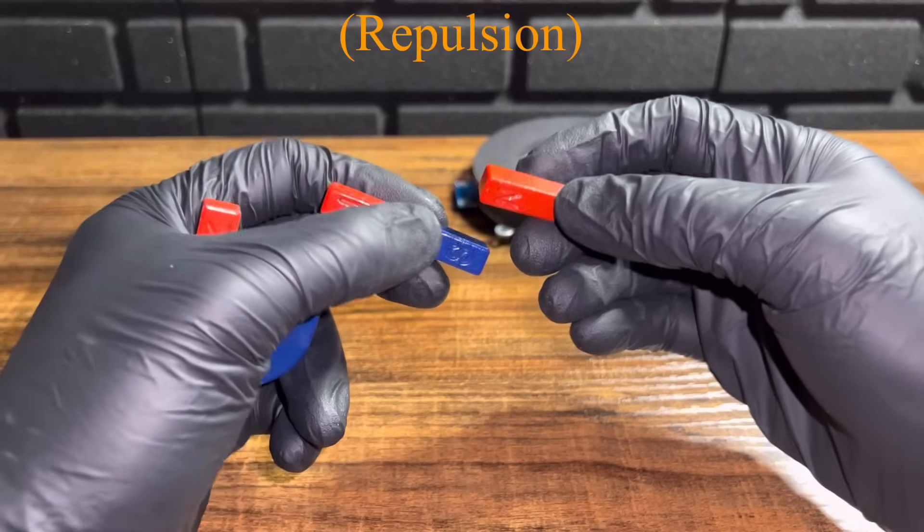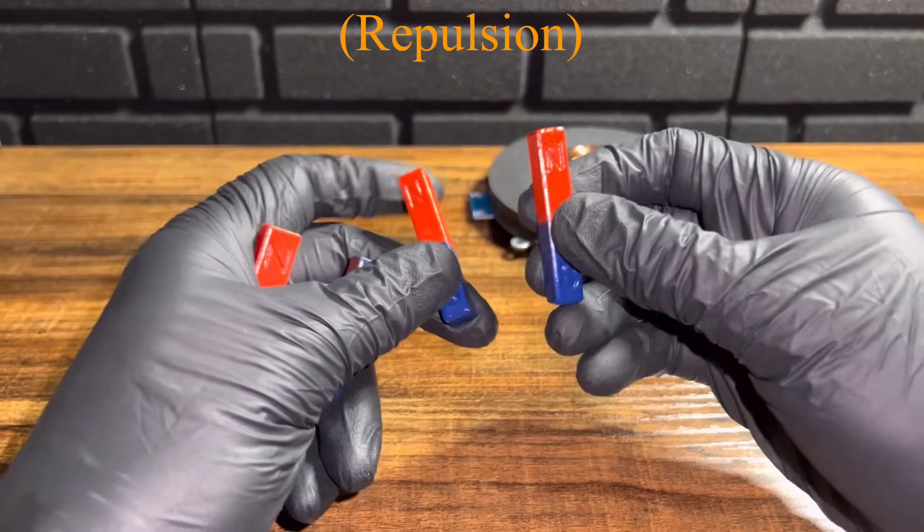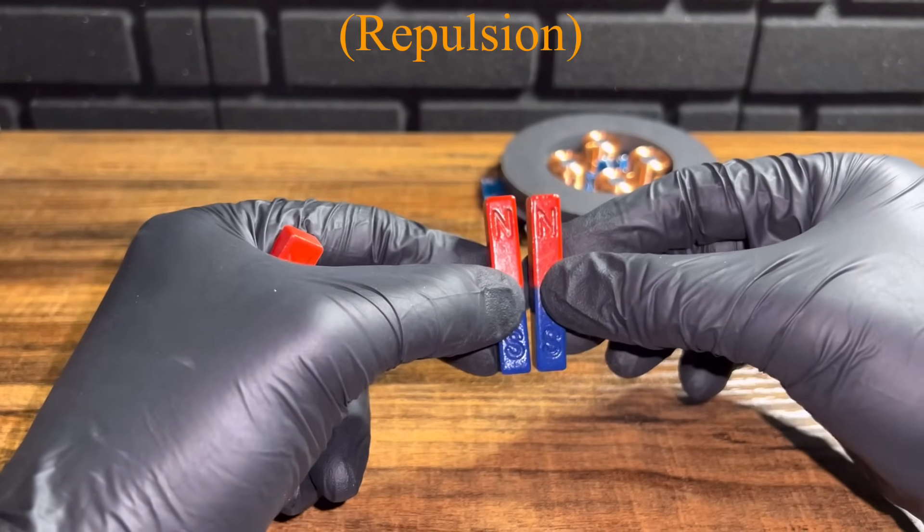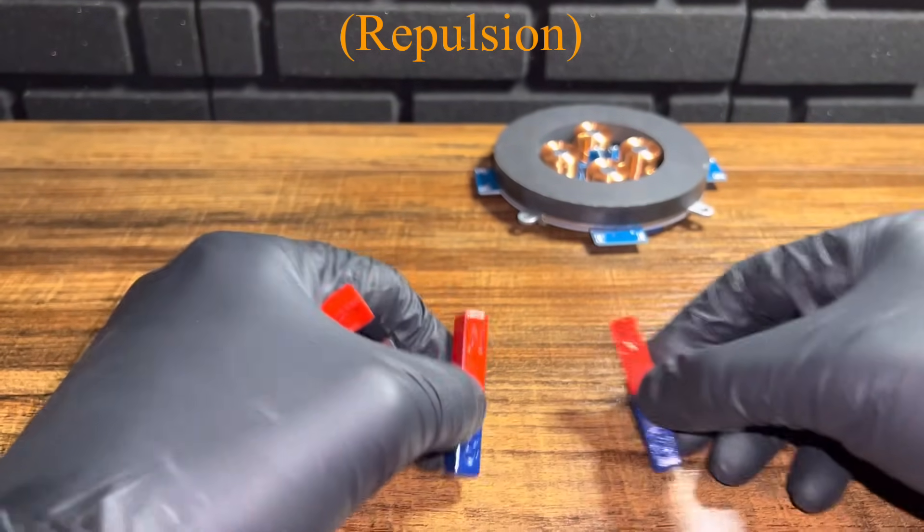We create repulsion when we put two of the same poles near each other. So two north poles and two south poles.